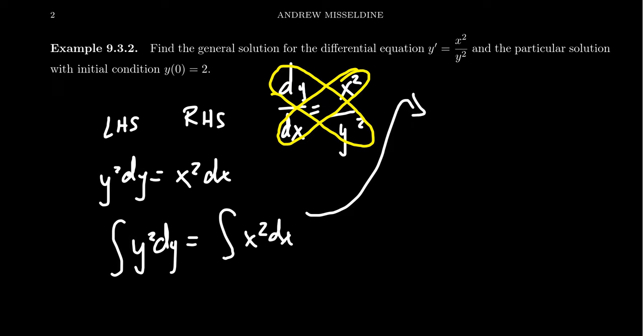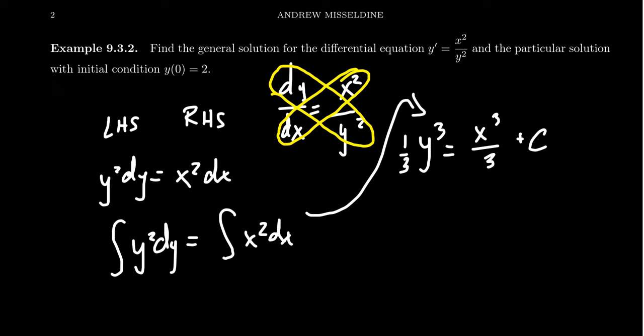The left-hand side gives you one-third y cubed. On the right-hand side, you get x cubed over 3 plus a constant. You don't need a plus c on both sides even though there are two integrals — you only need a plus c on the right-hand side, because this is an arbitrary constant. As you add an arbitrary constant on both sides, you can combine them on the right and it doesn't make much of a difference.